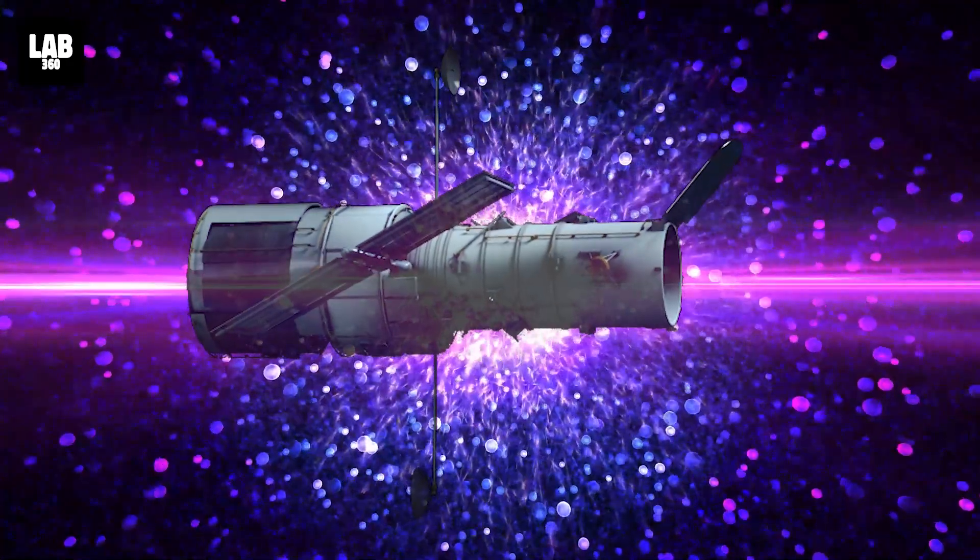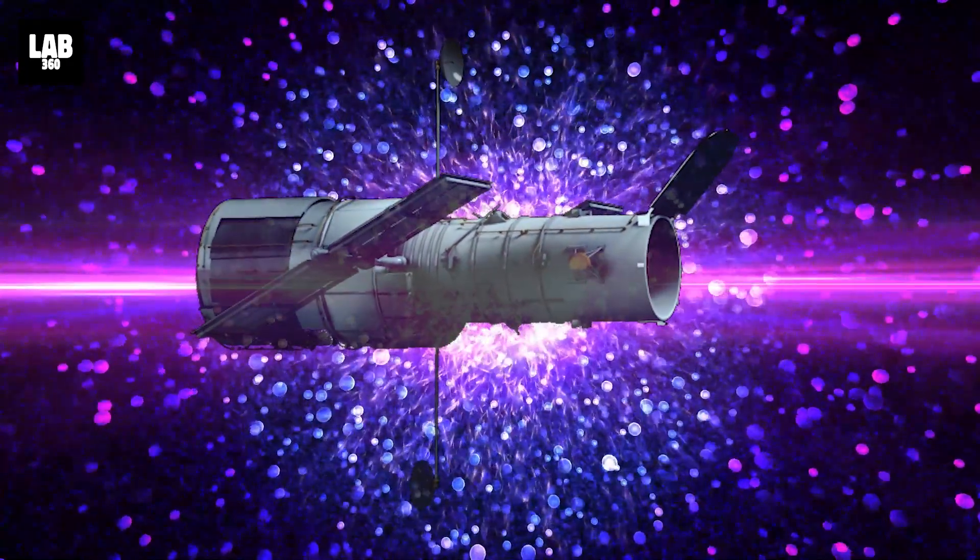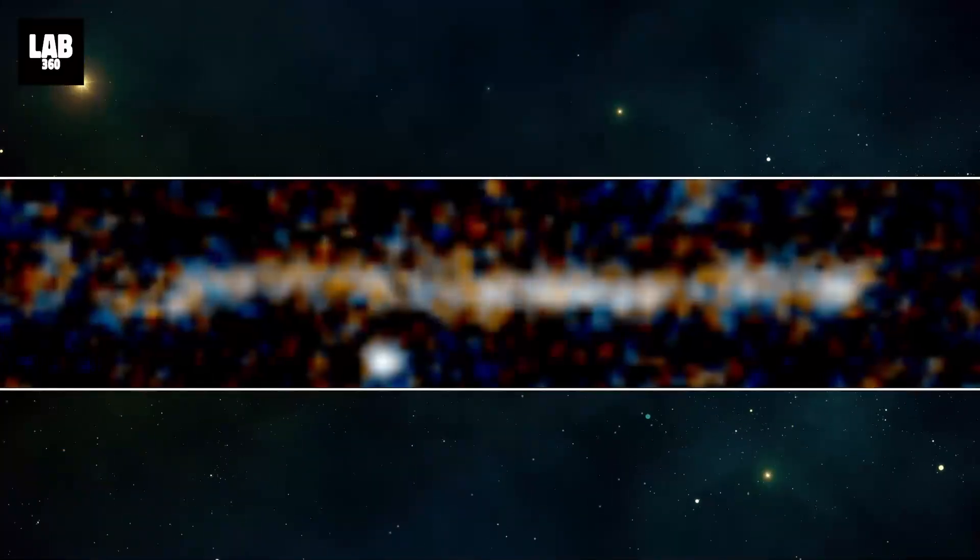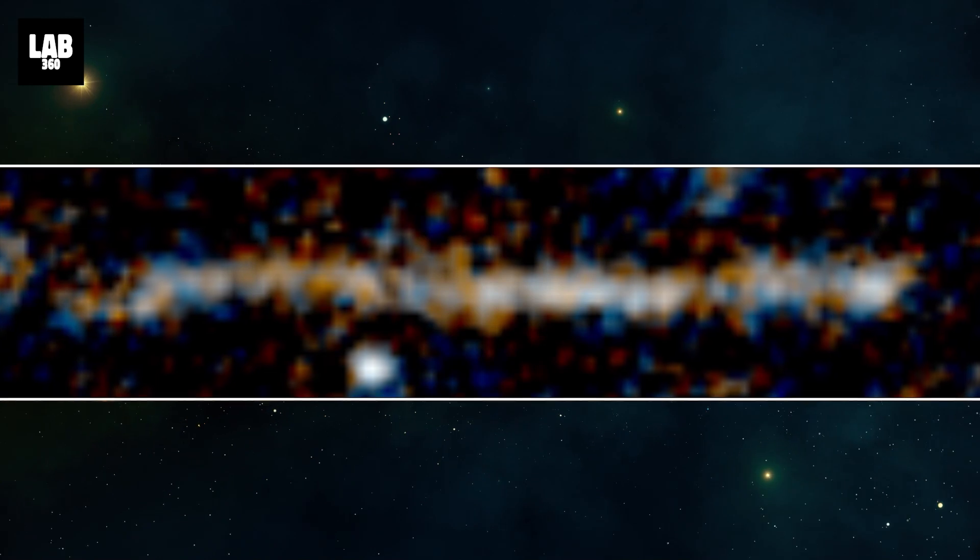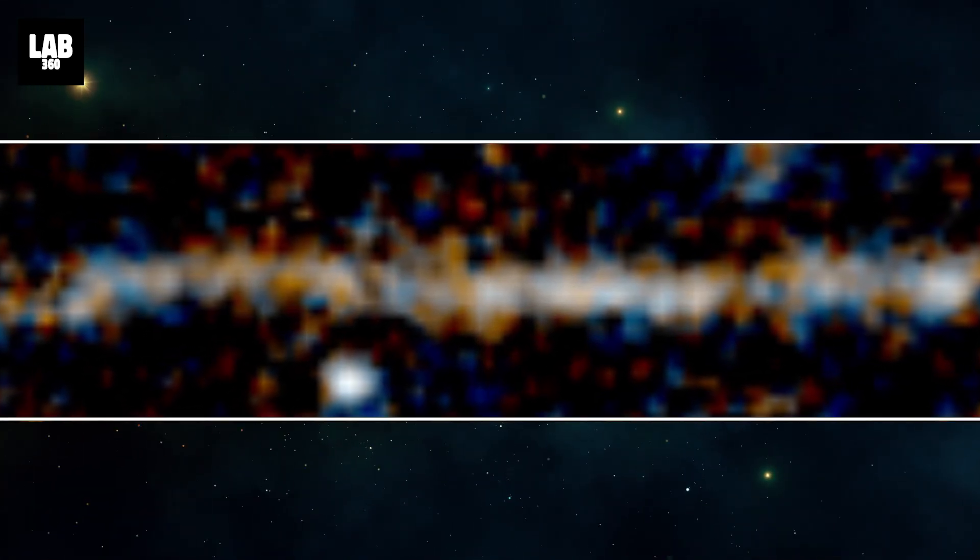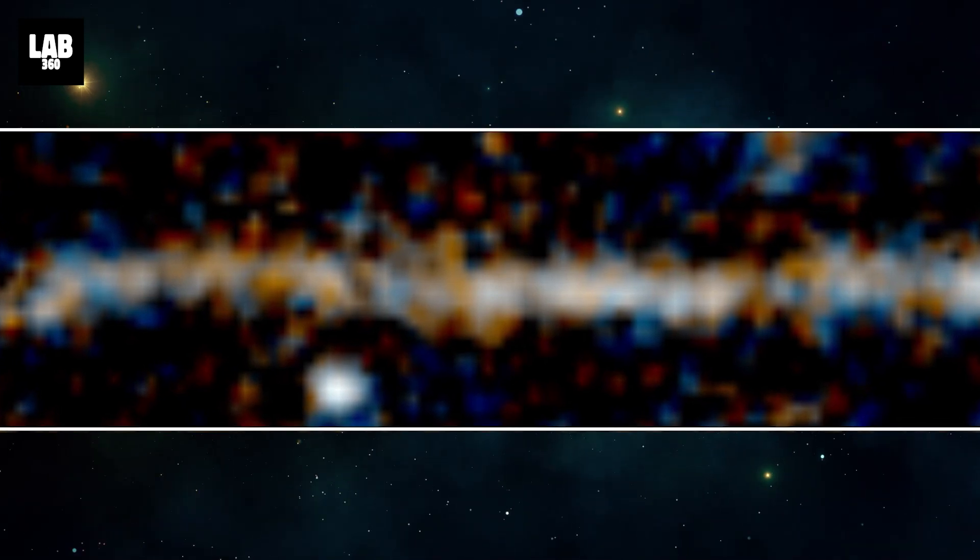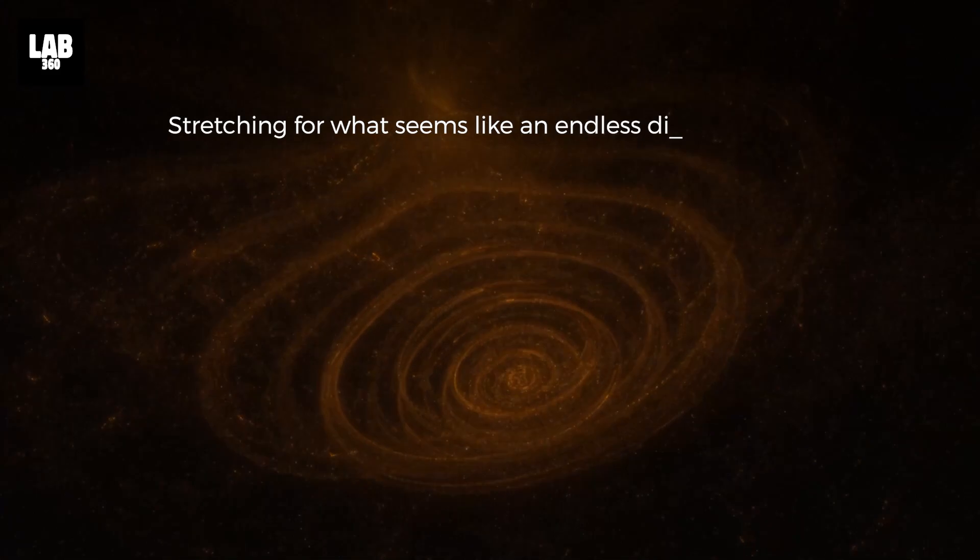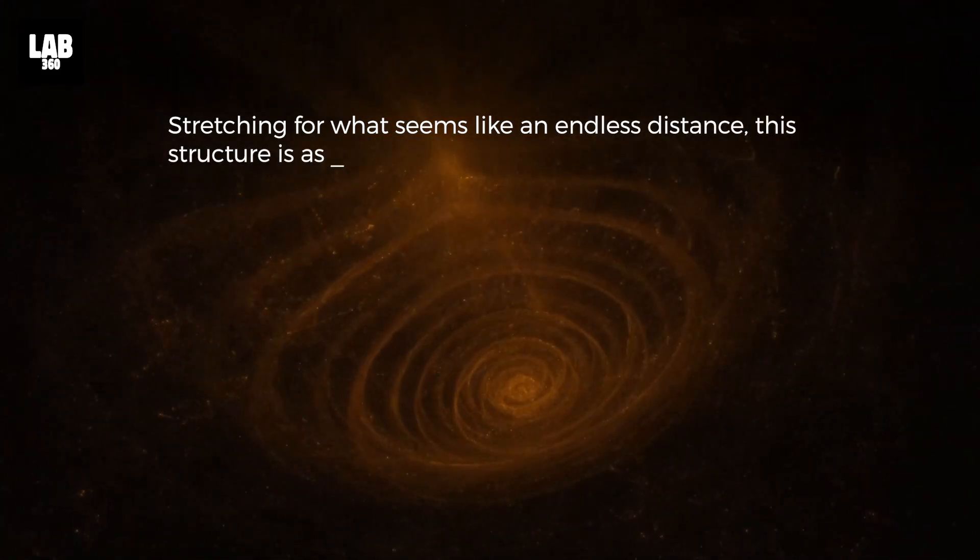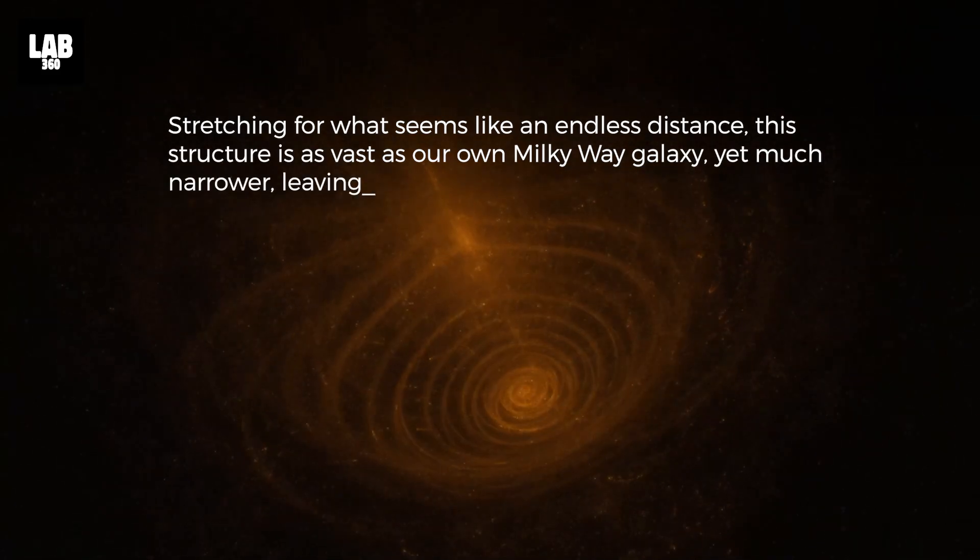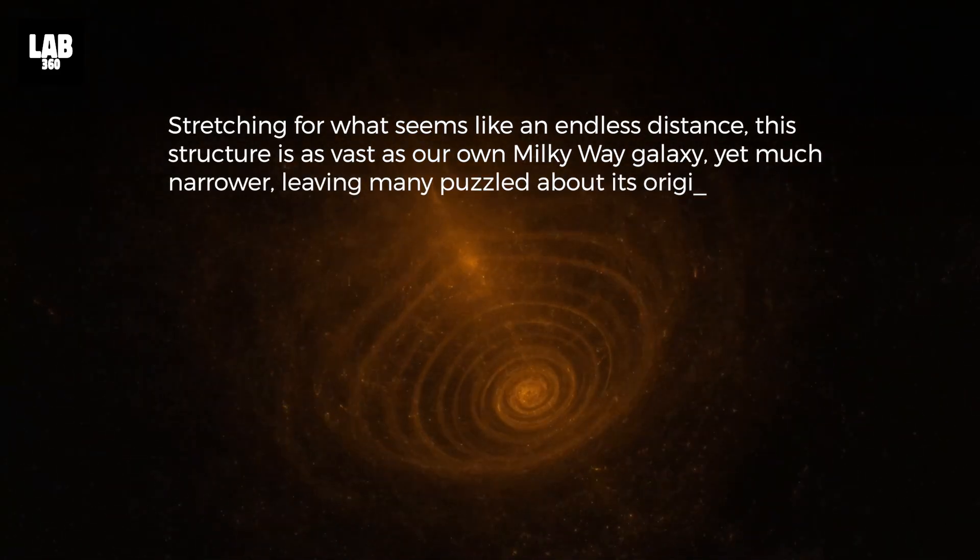In the depths of space, a mysterious trail of stars has been discovered by the Hubble Space Telescope. This trail, formed 8 billion years ago, has confounded researchers and challenged their understanding of the universe. Stretching for what seems like an endless distance, this structure is as vast as our own Milky Way galaxy, yet much narrower, leaving many puzzled about its origin.